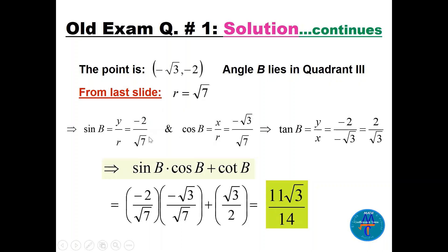By definition: sin(b) = y/r = -2/√7, cos(b) = x/r = -√3/√7, and tan(b) = y/x, which is positive in Quadrant 3. Substituting into sin(b)·cos(b): the denominator gives 7 and the numerator gives 2√3. For cot(b), we get √3/2 since cot is the reciprocal of tan.